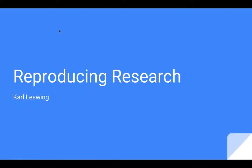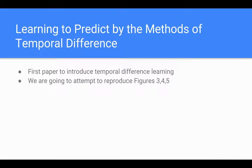Hi, this is Carl Lessling, and this is the final project for CS 8803 reinforcement learning. What we're trying to do here is to reproduce research from a paper by Sutton et al., 'Learning to Predict by the Methods of Temporal Difference Learning.'